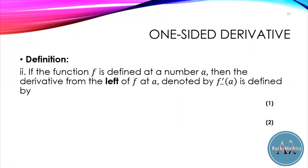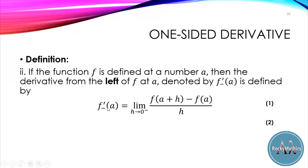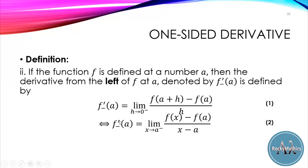On the other hand, the left-hand derivative is denoted by this notation. The formula is: f prime sub-minus of a equals the limit of f of a plus h minus f of a over h as h approaches 0 from the left. This is equivalent to the formula f prime sub-minus of a equals the limit of f of x minus f of a over x minus a as x approaches a from the left. We call this the left-hand derivative if the derivative exists.